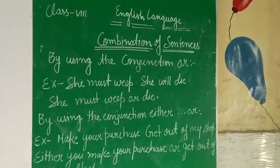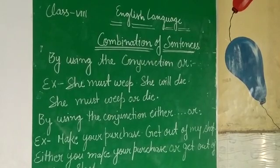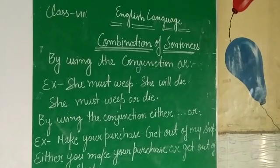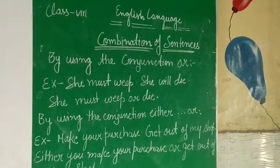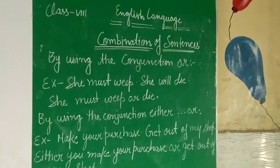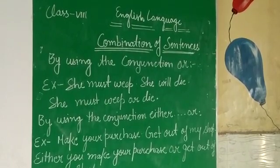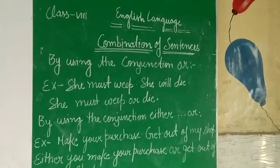Next example from your book: you should go there at once. Your brother should go there at once. How will you make a simple sentence? Either you or your brother should go there at once.